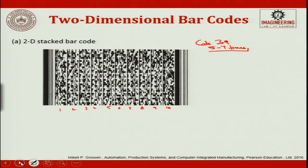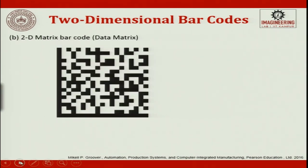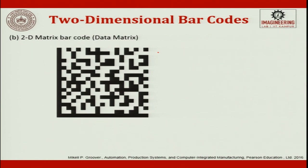Matrix barcodes consist of 2D patterns of data cells that are usually square and colored dark and white. They contain up to 30 times more data than Code 39. However, they are more complex and require more sophisticated printing and reading equipment. The symbols must be produced and interpreted both horizontally and vertically. Recent advances have produced improvements in matrix readers, making them easier to set up, more robust, and reliable under a range of conditions.